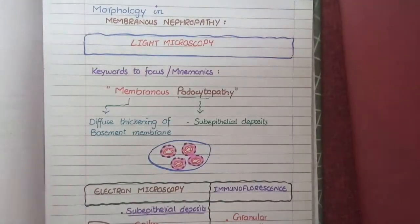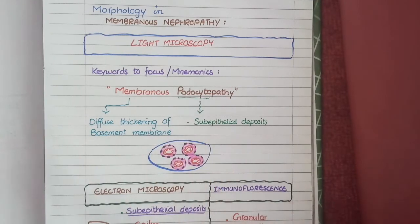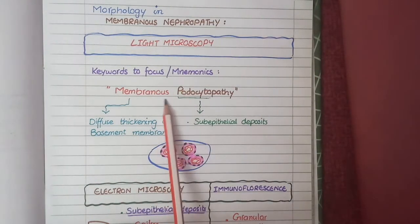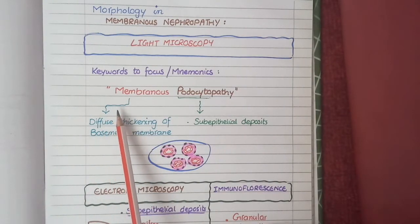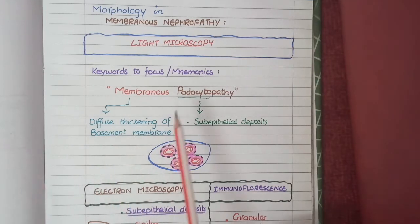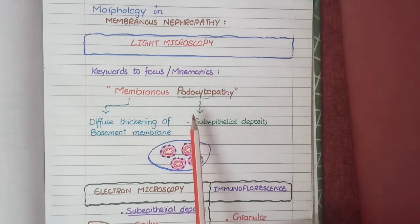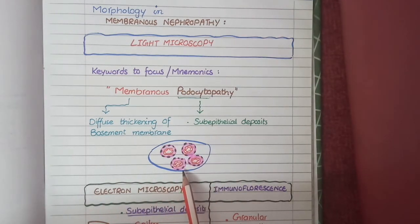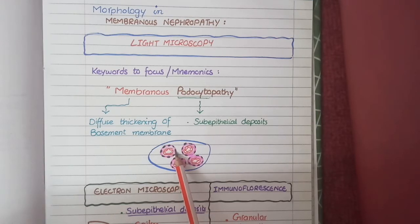For the morphology of membranous nephropathy on light microscopy, the mnemonic is 'membranous podocytopathy.' 'Membranous' refers to the glomerular basement membrane — on light microscopy you will see diffuse thickening of the basement membrane. 'Podocytopathy' refers to involvement of podocytes, reminding you of the sub-epithelial deposits. In the diagram, a cut section of the glomerulus shows multiple capillary loops with a thickened basement membrane and black-colored sub-epithelial deposits on its outer aspect.